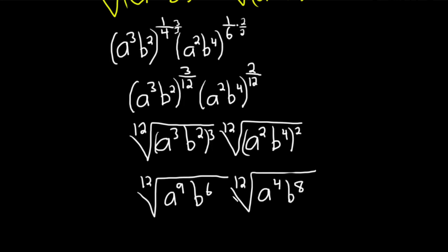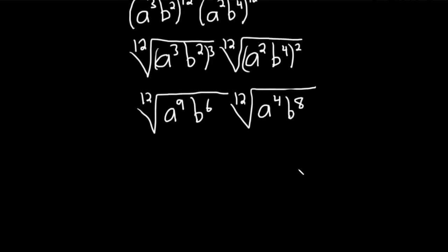So now we're going to multiply through. And we just add the exponents. Now we're going to have a single 12th root. The 12th root of... So here we add 4 plus 9 is 13. 6 plus 8 is 14.